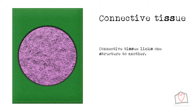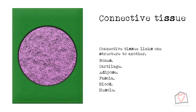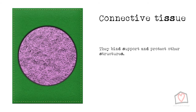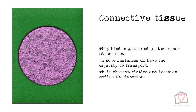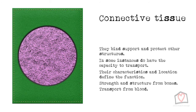Connective tissues are those that link one structure to another, most notably bones, cartilage, adipose, fascia, blood and muscle. They bind, support and protect other structures, but in some instances also have the capacity to transport. Their characteristics and location define the function, such as strength and structure from bones and transport from the blood — this is a unique example.